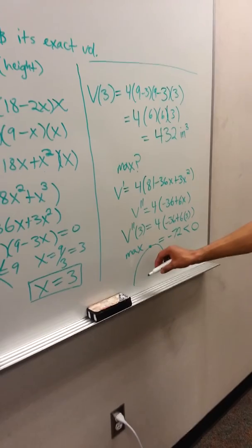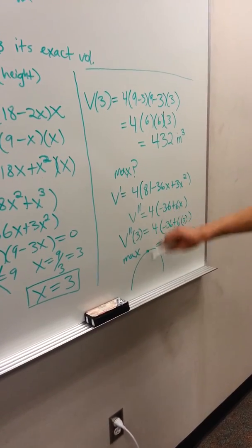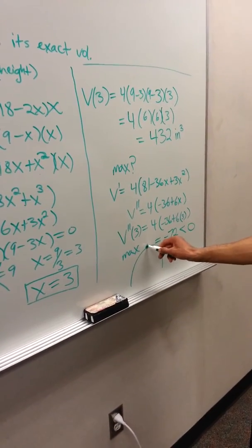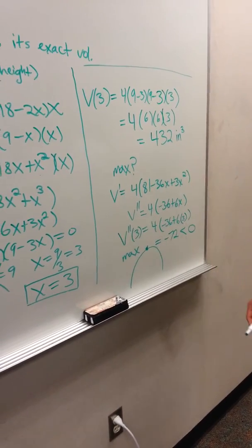That means we have a relative max because it's concave down. So we know this is the maximum volume for this box with the open top, which is 432 cubic inches.